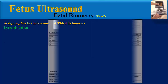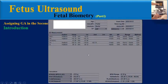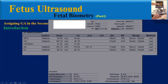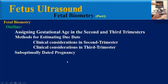So, if you intend to assign the gestational age in the second trimester, it is better to mention all details of each biometric parameter in the report, including the value of each parameter, the gestational age related to this value, and the percentile.